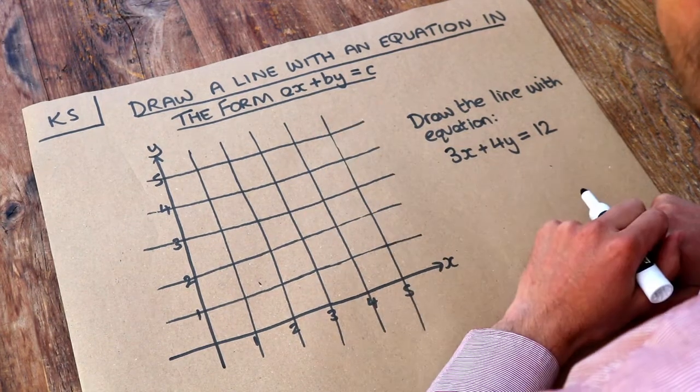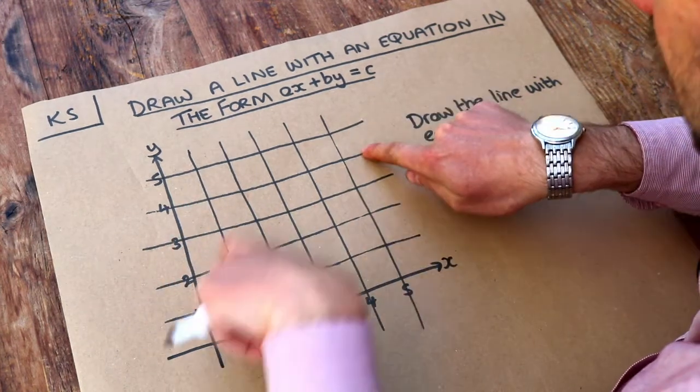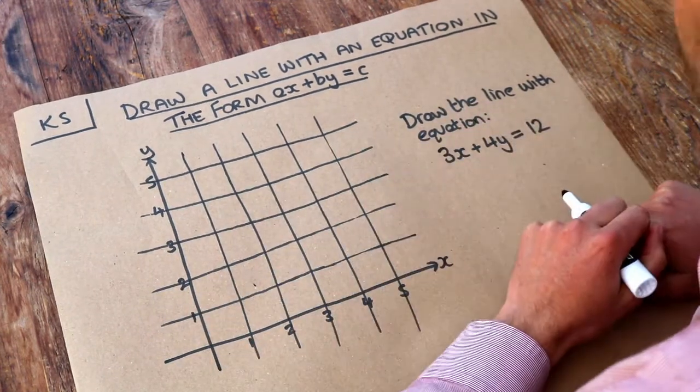How many points do we need to draw a straight line? We just need two points because if we draw two points, we can join those two points to form a line.